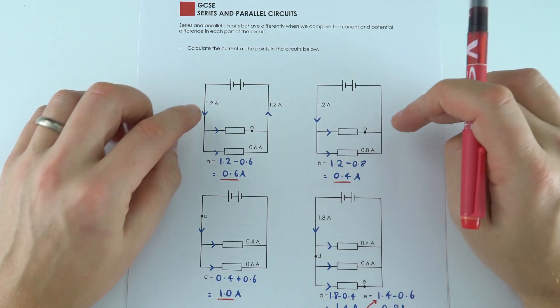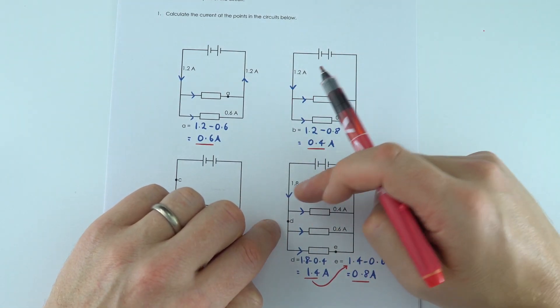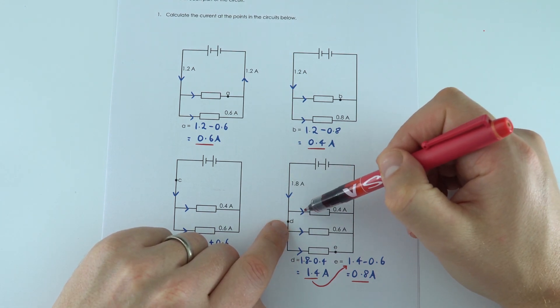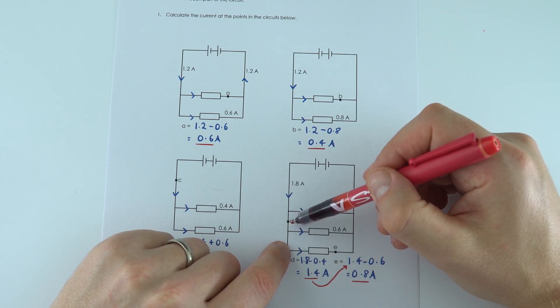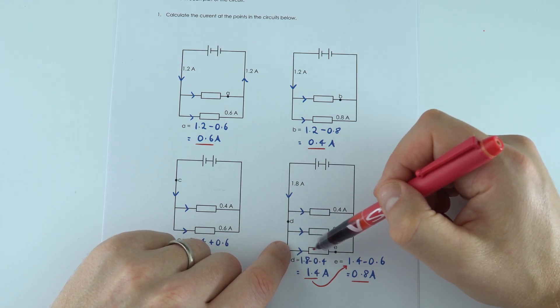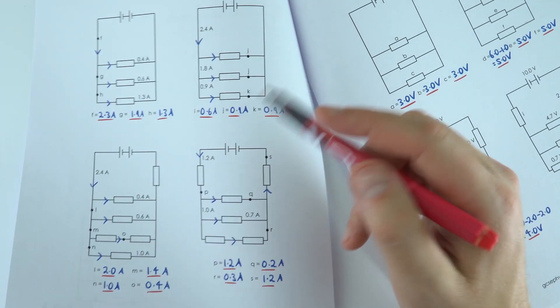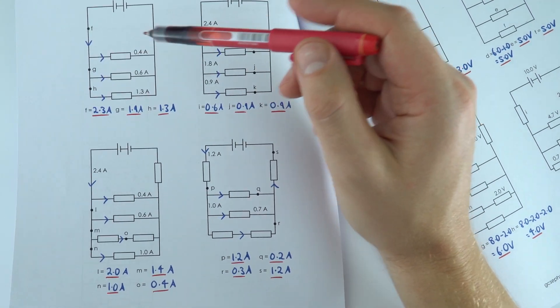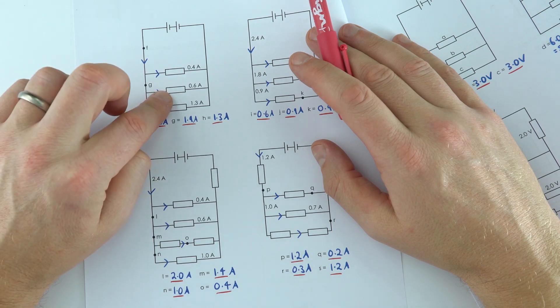And again we find the same for the other questions here. As I kind of drew my diagrams here, I worked out maybe D first of all - 1.8 take away 0.4 leaves 1.4 here, and then that 1.4 take away 0.6 leaves 0.8 going through point E. And again I did exactly the same with these ones over here, just working step by step, thinking at each junction that the current splits going different ways around that circuit.